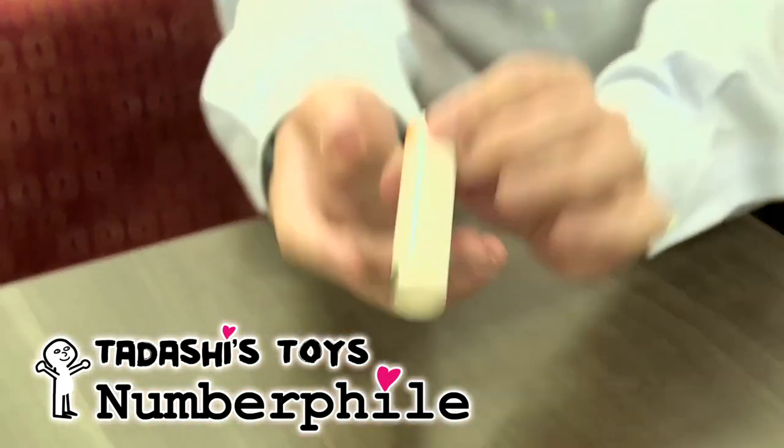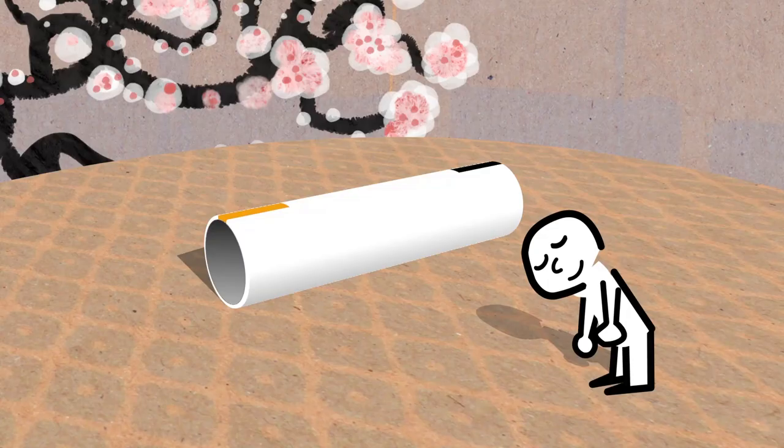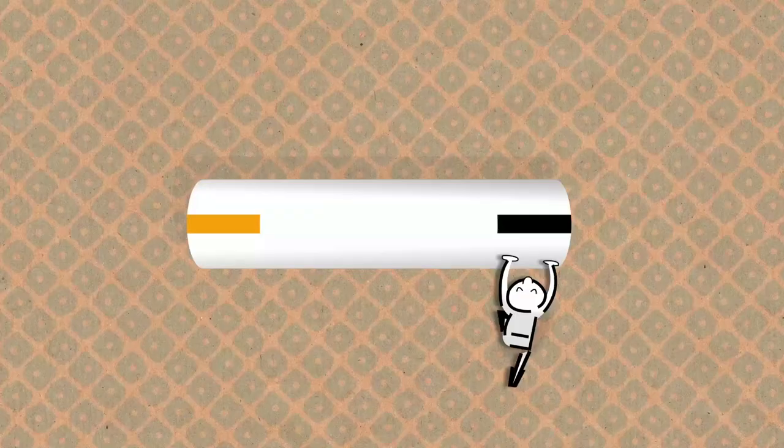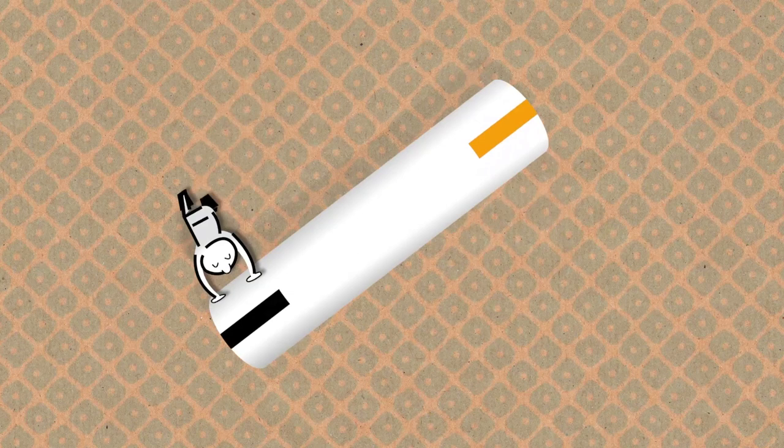I brought a little tube whose ends have been colored black and orange, and I'm going to launch it into a spin. It will spin around the middle. Because it's spinning around the middle, there's no reason why you should see black better than orange, or orange better than black.